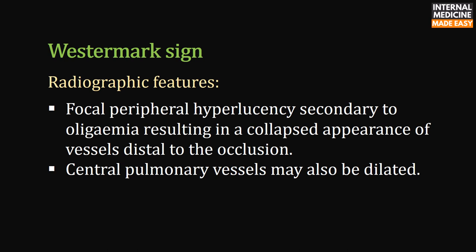Radiographic features of the Westermark sign include focal peripheral hyperlucency secondary to oligemia, resulting in a collapsed appearance of vessels distal to the occlusion. Central pulmonary vessels may also be dilated.